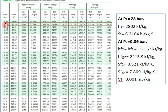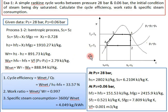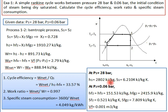We now have all enthalpy, entropy, and specific volume values at pressures P1 and P2 from the steam table. At P1 = 28 bar we have h1 and s1. At P2 = 0.06 bar we have hf2 = hf3, hfg2, sf2, sfg2, and vf.